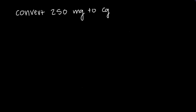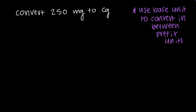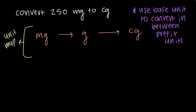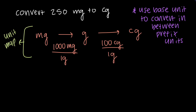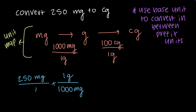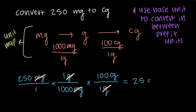Next, we can look at converting between two different prefix units. In this example, we are going to convert 250 milligrams to centigrams. To convert between two different prefix units, I'll use the base unit grams in between. Setting up the unit map: milligrams to grams to centigrams. From the table, there are 1000 milligrams in 1 gram and 100 centigrams in 1 gram. Starting with 250 milligrams over 1, the next fraction has milligrams on the bottom and 1 gram on top — milligrams cancel. Then I place 1 gram on the bottom and 100 centigrams on top — grams cancel. Multiplying and dividing all values, I get 25 centigrams with the correct number of significant figures.